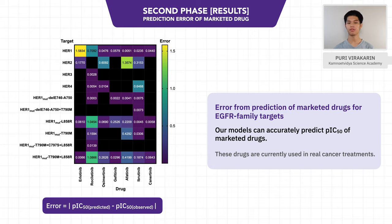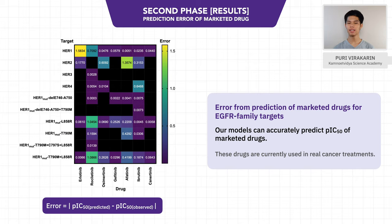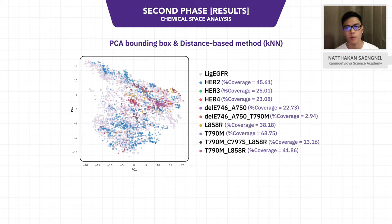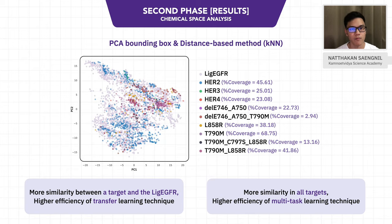To confirm the implementation of our models, the heat map shows the prediction errors of the marketed drugs that are currently used in lung cancer treatment. For example, the first HER1 mutant target shown on the fifth row — our model can predict PIC50 of Osimertinib, Gefitinib, Afatinib, and Almonertinib with an accuracy of 0.01. In other words, all models effectively predict PIC50 of marketed drugs, so the model can be used in virtual compound screening. We also plot the PCA to reveal the chemical space of compounds in each targeted protein. The analysis shows that the similarity between the target and the LIC-EGFR affects the transfer learning technique's efficiency, and the similarity among all the targets impacts the efficiency of the multi-target learning technique.